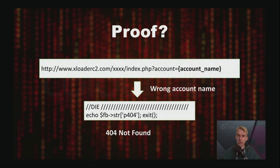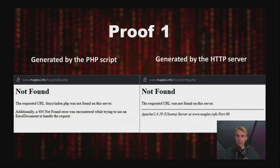We assumed XLoader's panel should share some code with Formbook's panel. We took the leaked Formbook panel source code to see how it should be accessed. It appeared we should use a path containing the campaign ID and a valid account name as an argument for index.php. If you enter a wrong account name, the panel generates a 404 error page. While testing the Formbook panel on a local web server, we found that the error page generated by the PHP script differs from the page generated by the server itself. We found the same behavior on the supposed XLoader C2 servers. Unfortunately, after we published our findings, the malware creators fixed this issue.